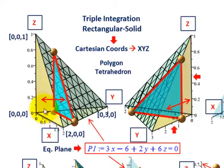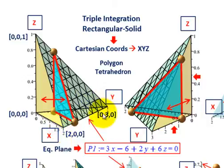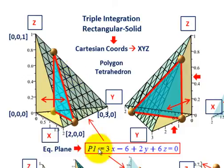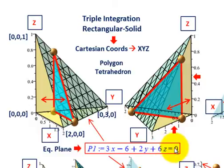We're dealing with a simple tetrahedron. This is our 0, 0 point; along our x-axis we're coming out two units, and along our y-axis we're going over three units. This slanted surface from our x, y plane up to z is represented by the equation plane of our tetrahedron: 3x minus 6 plus 2y plus 6z equals 0.